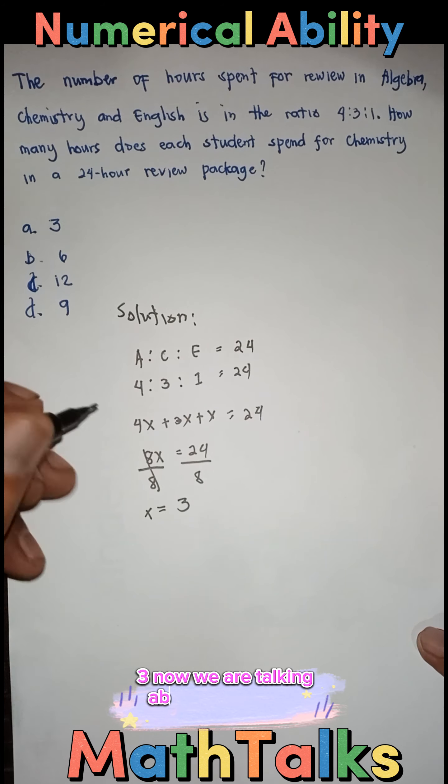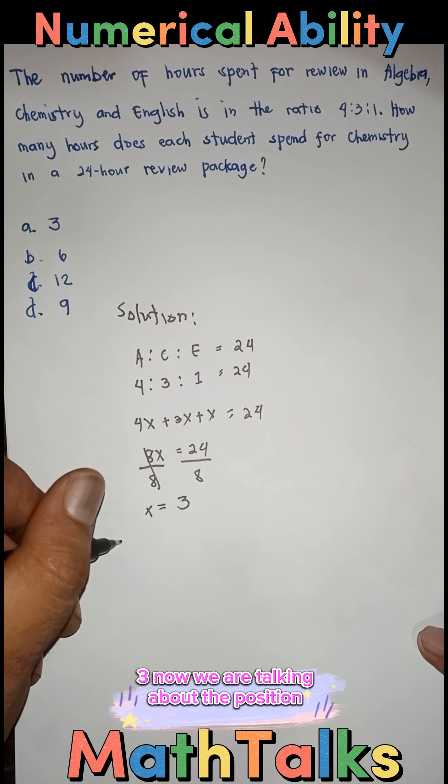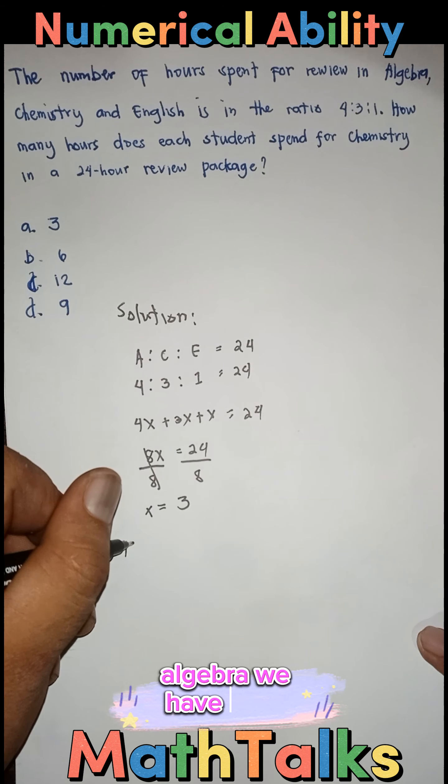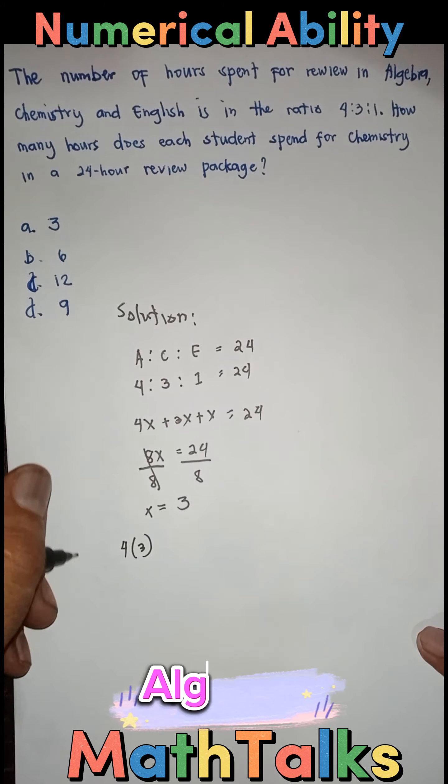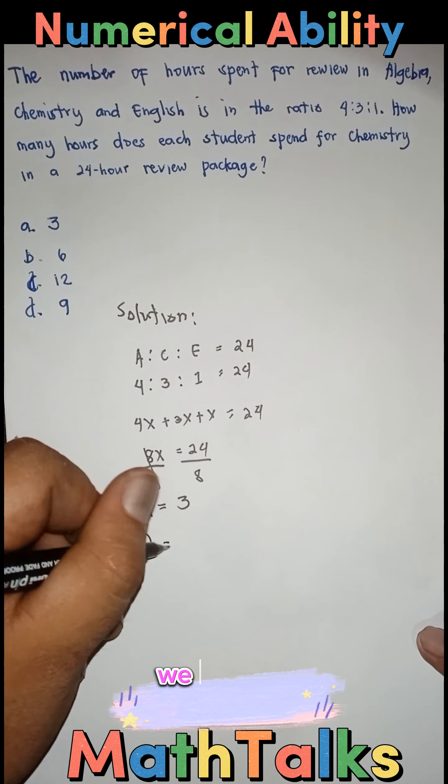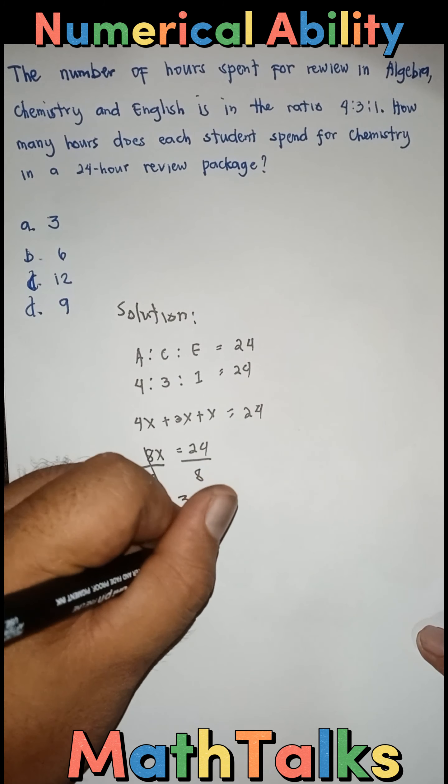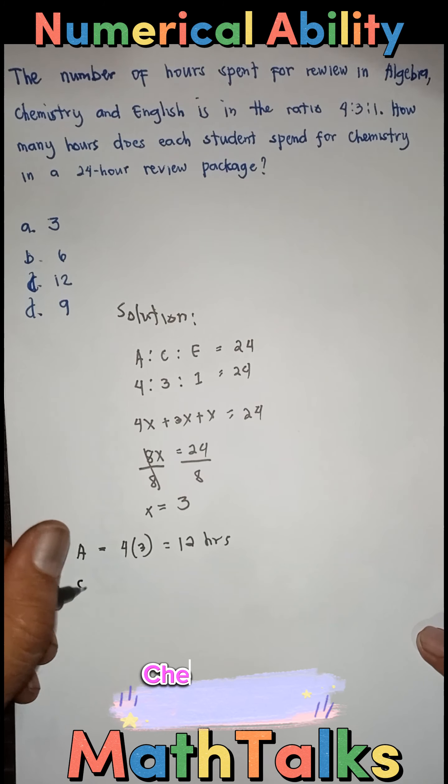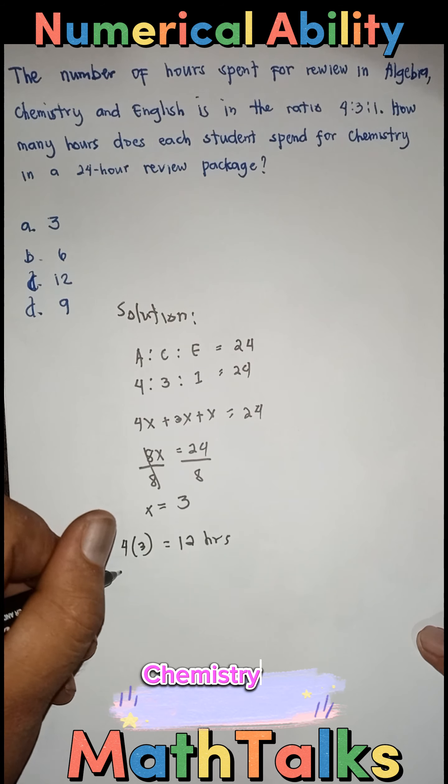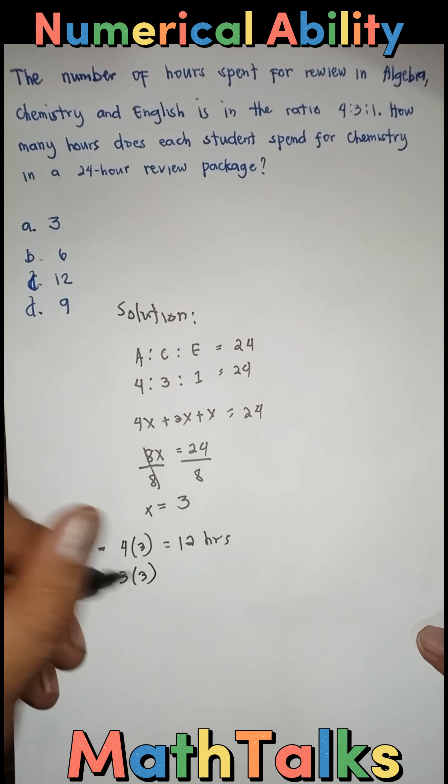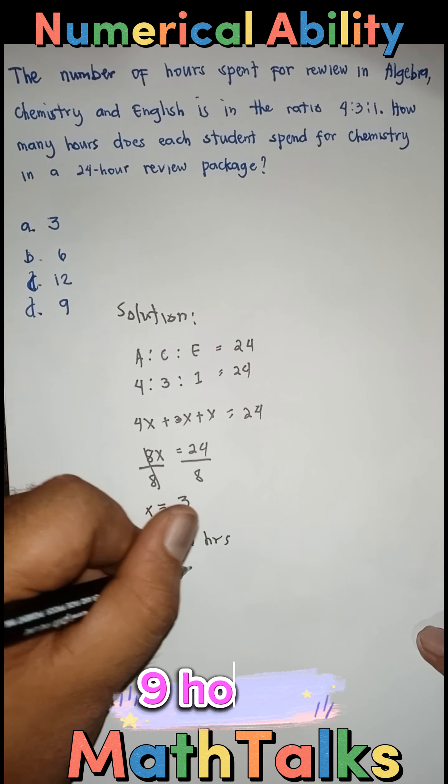Now, we are talking about the position. So, sa Algebra, we have 4 times 3. Sa Algebra ito ah. We have 12 hours. Then, sa Chemistry, we have 3 times 3. We have 9 hours.